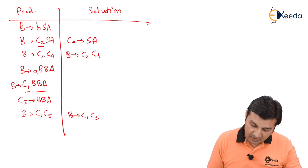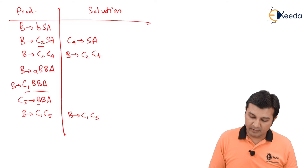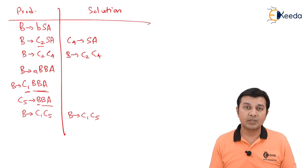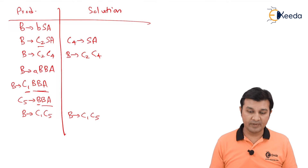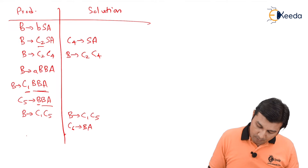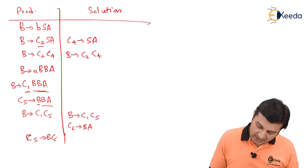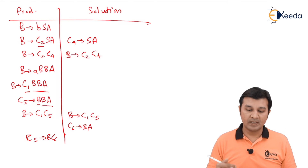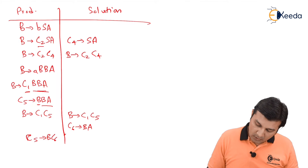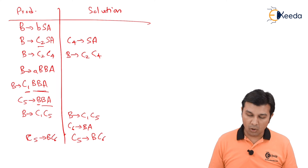C5 is not yet in CNF. Applying the trick again: keep B as the first term and replace BA with C6 giving BA. So C5 gives B C6, which is now in CNF. C6 gives BA is also in CNF. Add both to the solution. That completes all the productions.